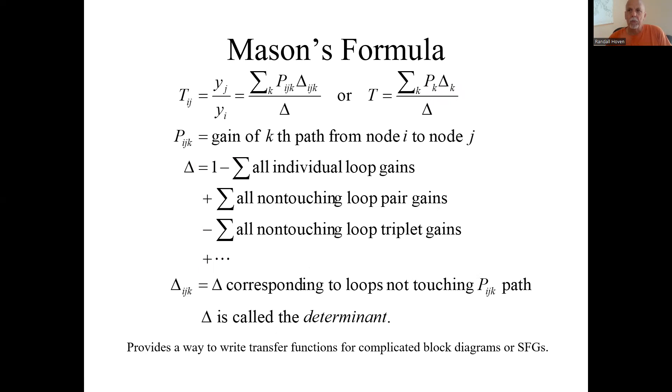So that's that big determinant. Up here is the sum for each path. The K subscript is for path. So P is the gain of that path. And then what is this minor determinant? It's sort of like this determinant, but only using the loops that do not touch that path.